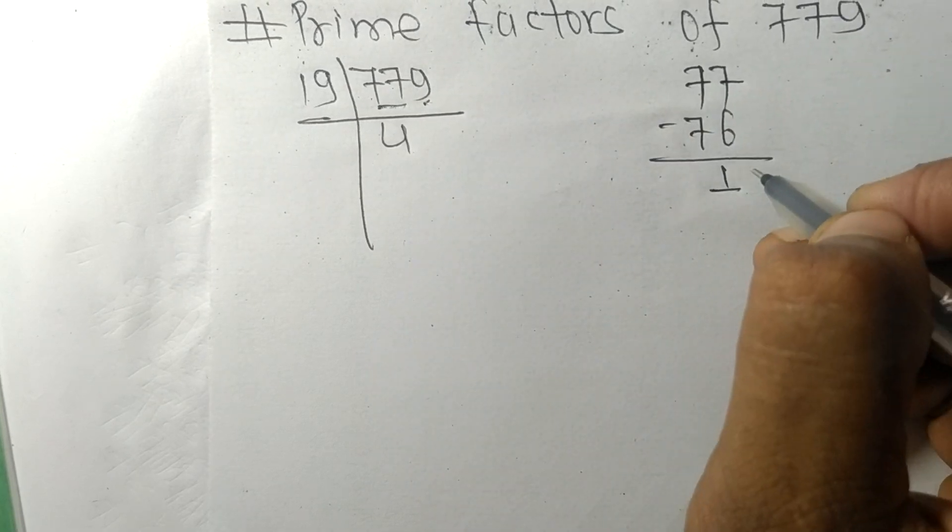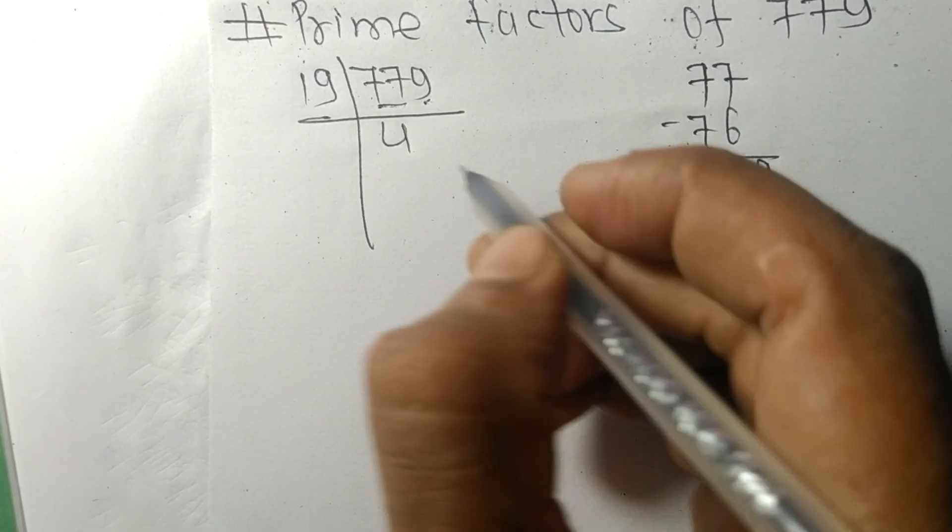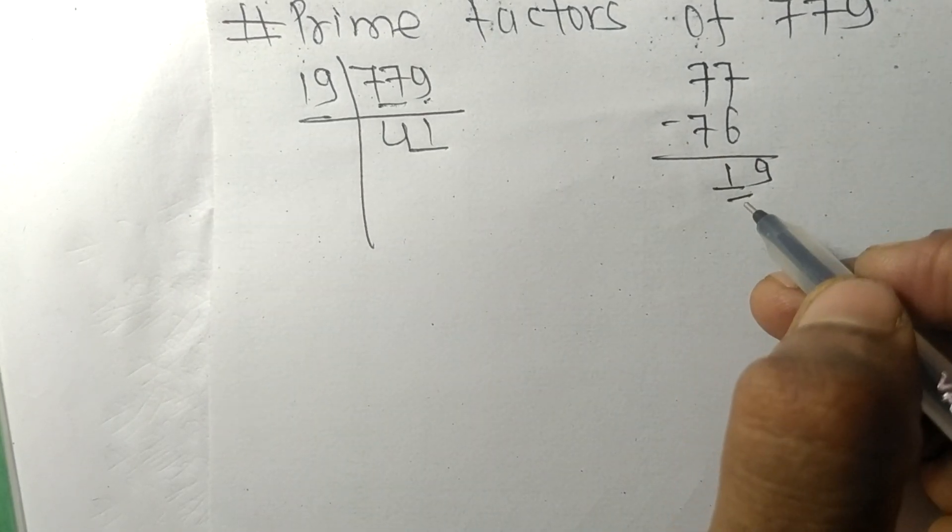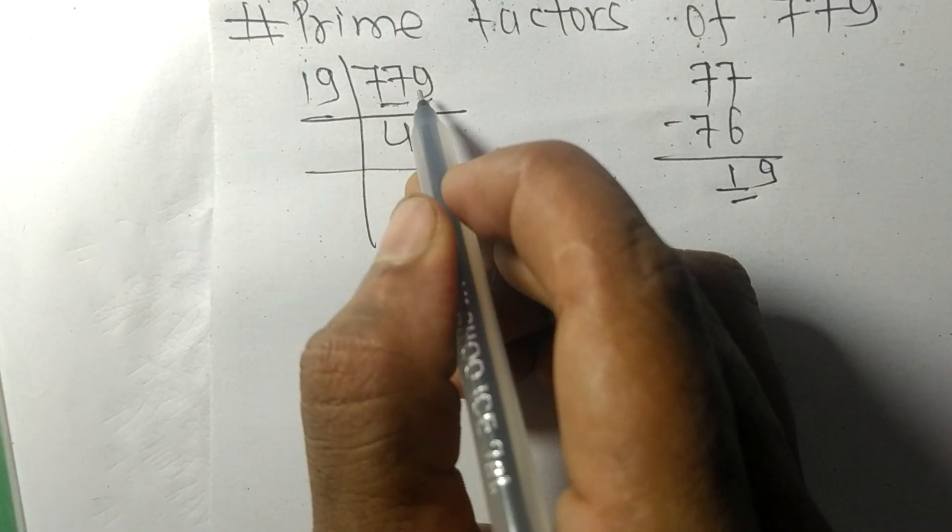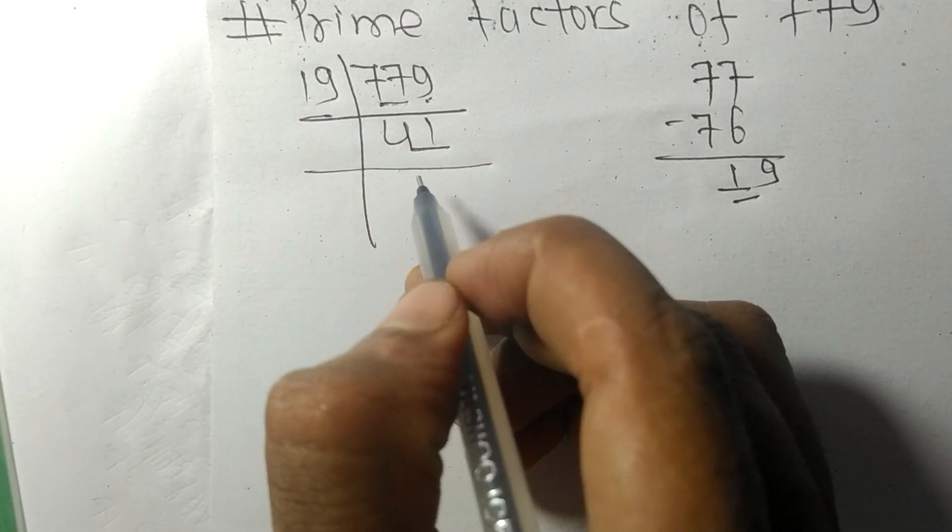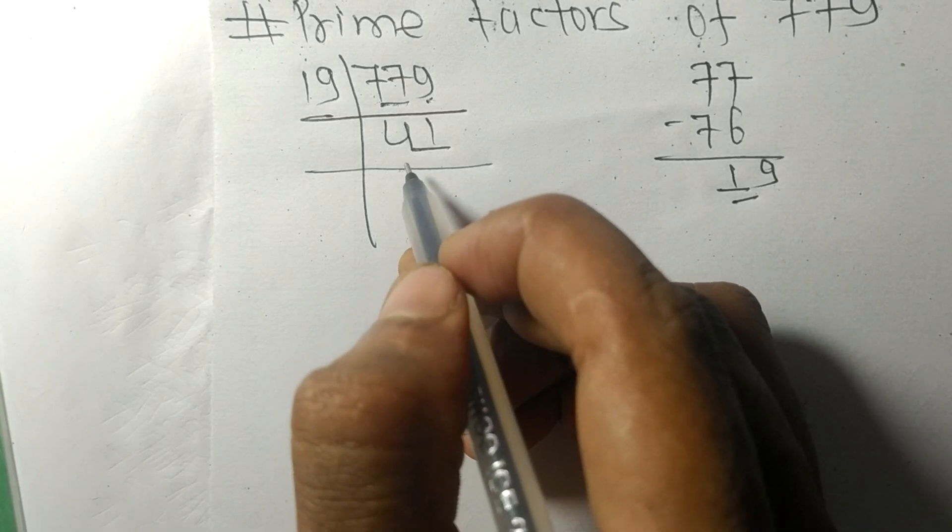And this 9, 19. 19 times 1 means 19. So on dividing 779 by 19 we got 41.